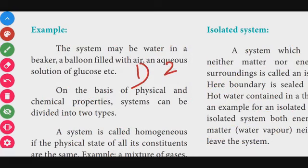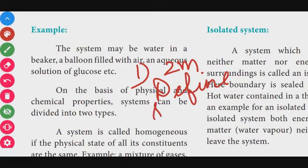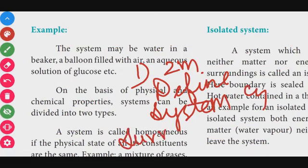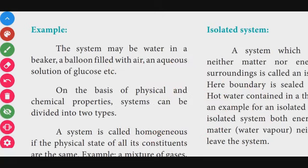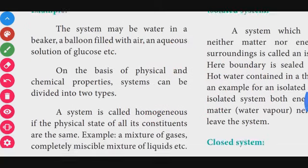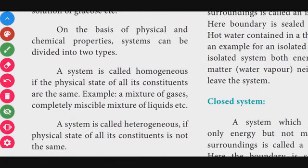Two-mark question: Define system and surroundings with suitable examples. A system has physical and chemical properties and can be classified based on those properties.